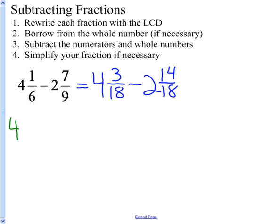Over here, I'm going to show you how borrowing works. If I have 4 and 3 18ths, I'm going to take 1 away from the 4 and make that a 3. But that 1 doesn't go away. It gets converted into 18 18ths because that's equal to a whole. So 3 and 18 18ths is equal to 4.